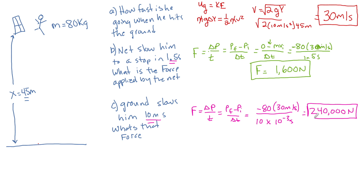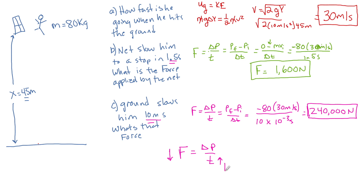This is a great example of 'it's not the fall that kills you, it's the sudden stop at the bottom.' This is also the reason we have airbags in our cars. What an airbag does is increase the time — F equals delta p over t — so it increases the time to change your face's momentum, which lowers the force. As opposed to the windshield or steering wheel, which stops your face in a very short time and massively increases the force.